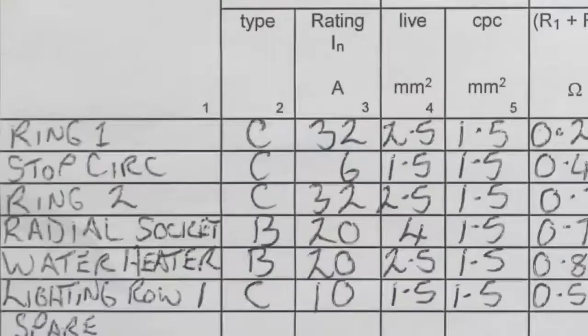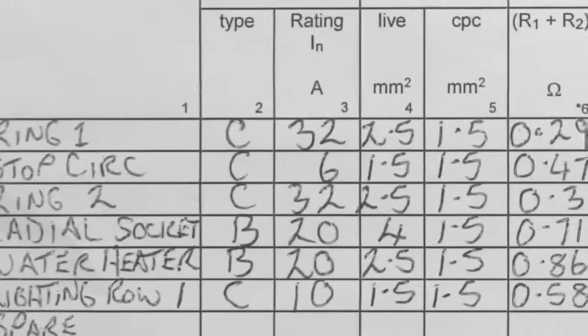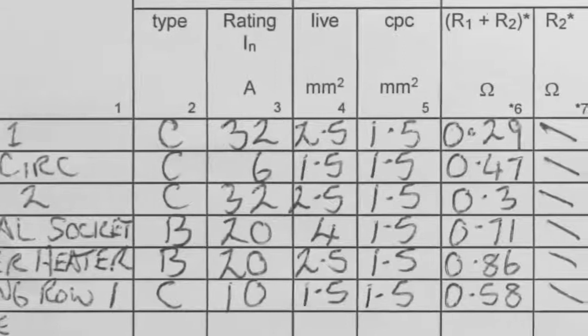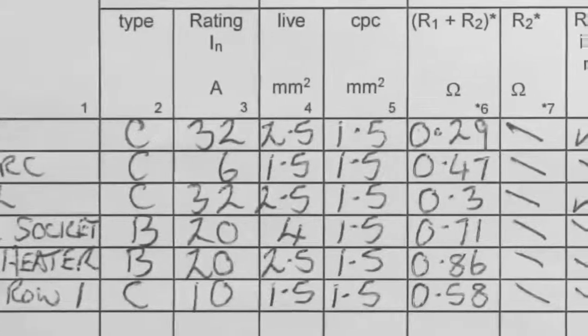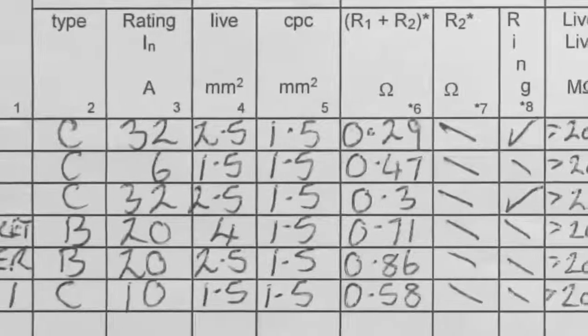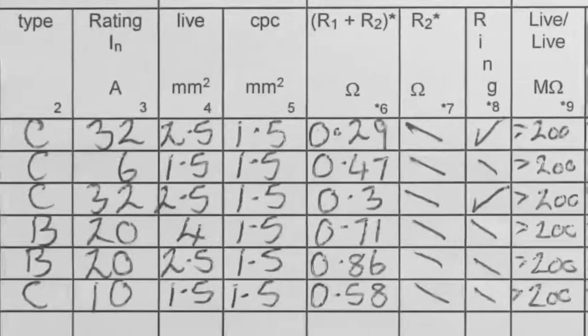Now, for instance, on this certificate here I've got various circuits and if we take circuit 4 we've got a 20 amp circuit wired in 4mm with a 1.5 CPC and we've got an R1 and R2 value of 0.71. That's all the information I need to calculate the volt drop in that circuit. So for a first instance we can use R1 and R2.